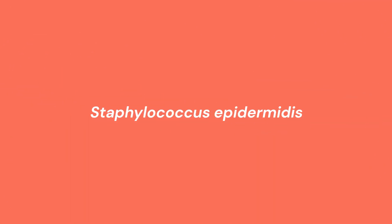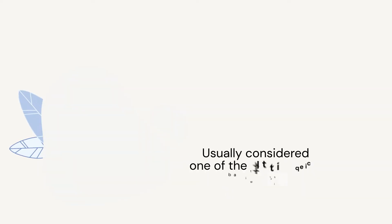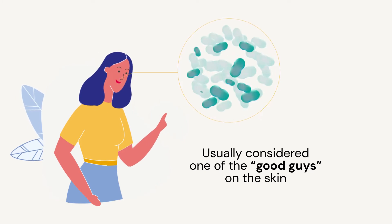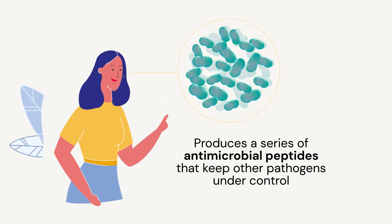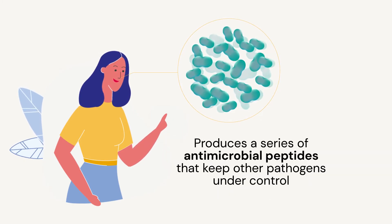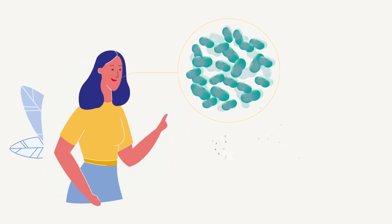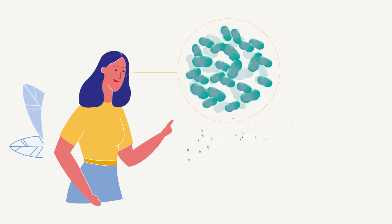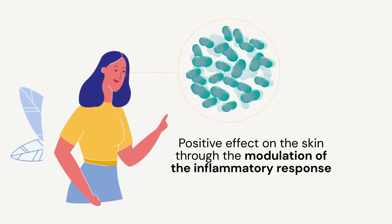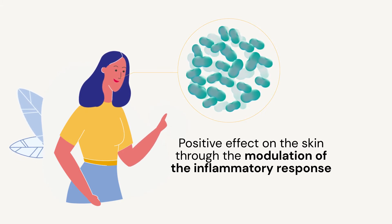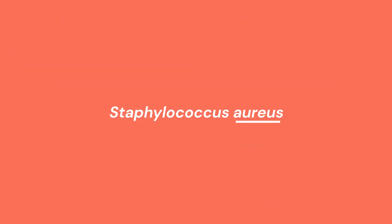Staphylococcus epidermidis — usually considered one of the good guys on the skin, it produces a series of antimicrobial peptides that keep other pathogens under control. There is also evidence of its positive effect on the skin through the modulation of the inflammatory response.